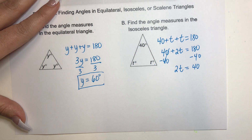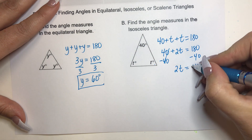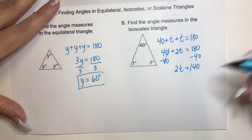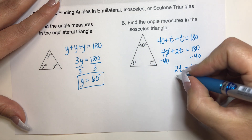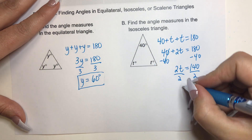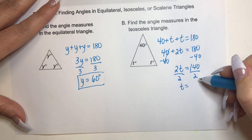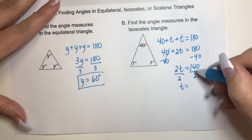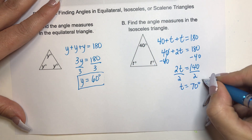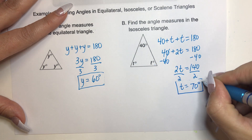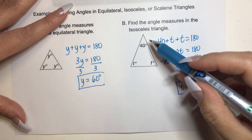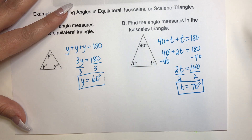So 2T equals 140. We divide both sides by 2 to get T by itself. 140 divided by 2 is 70 degrees. We can always check: 70 plus 70 is 140, plus 40 is 180. So that is correct.